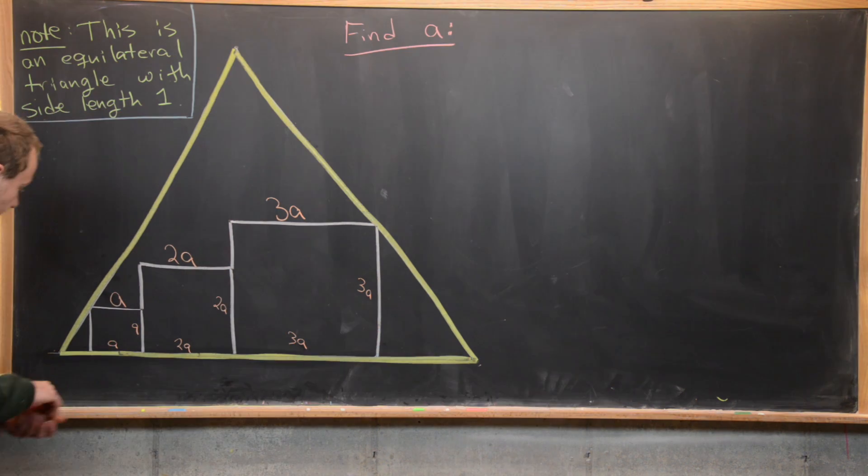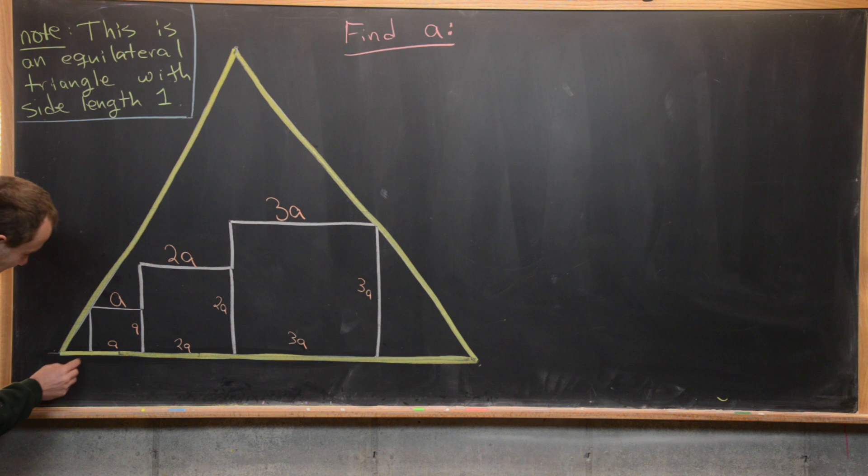Next I want to notice that if I set this length down here equal to x then I have some sort of relationship between a and x given that I know that this angle measure is 60 degrees or pi over 3 radians.